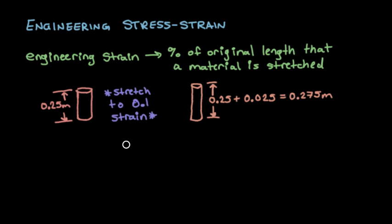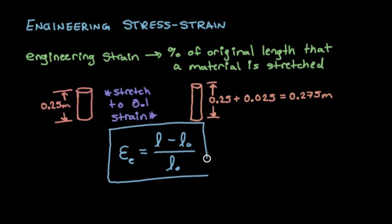So if we want an equation for engineering strain, we'll take the Greek letter epsilon and give it a little subscript E there so we know it's engineering strain. And it is equal to the length after you stretch it minus the original length, which we'll call L0, divided by the original length L0. And I'm going to put that in a box because it's important. And there's the definition of our variables there.